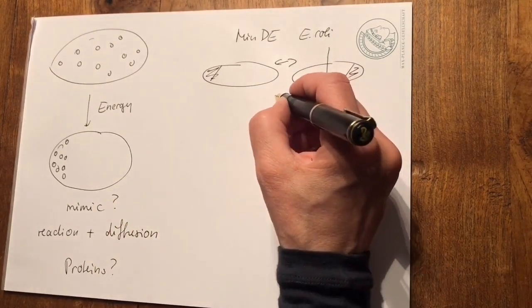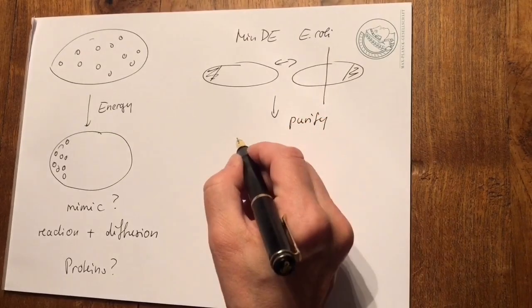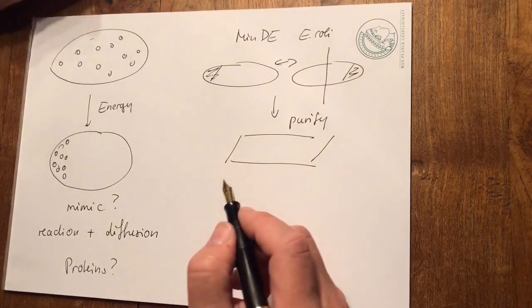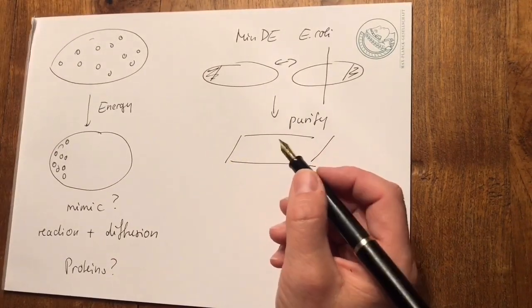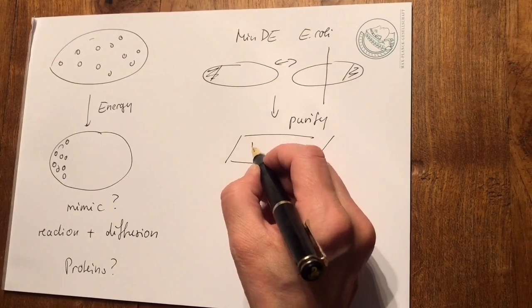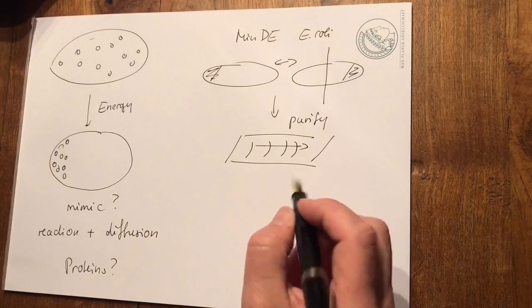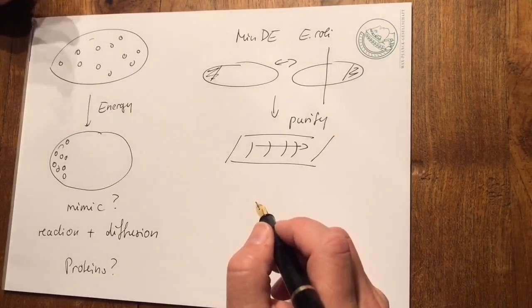And if you now take these proteins out of the cell and purify them and bring them to a supported membrane that looks like the inside of the bacteria with the only difference is that it's completely flat, then these oscillations turn into traveling waves at a certain propagation speed. So these proteins can be brought to self-organize and form patterns in vitro.